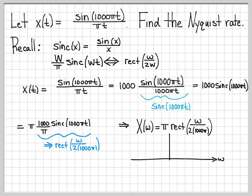If I plot that, what does that look like? It's a function of omega, and the rectangle function is a function of omega, and the total width of the function is two thousand pi. So this is a rectangle that goes from minus a thousand pi to a thousand pi, and the amplitude is just the coefficient out front, the pi.